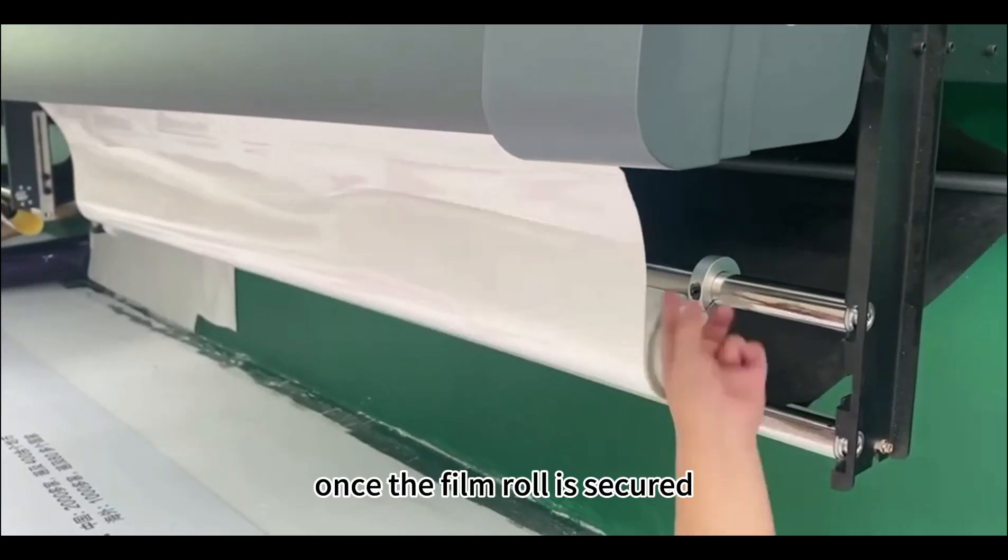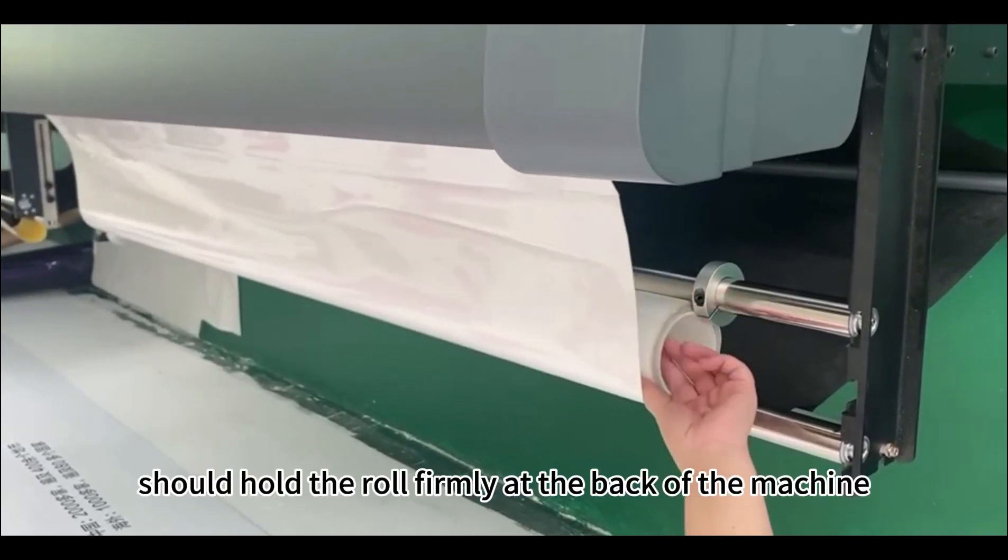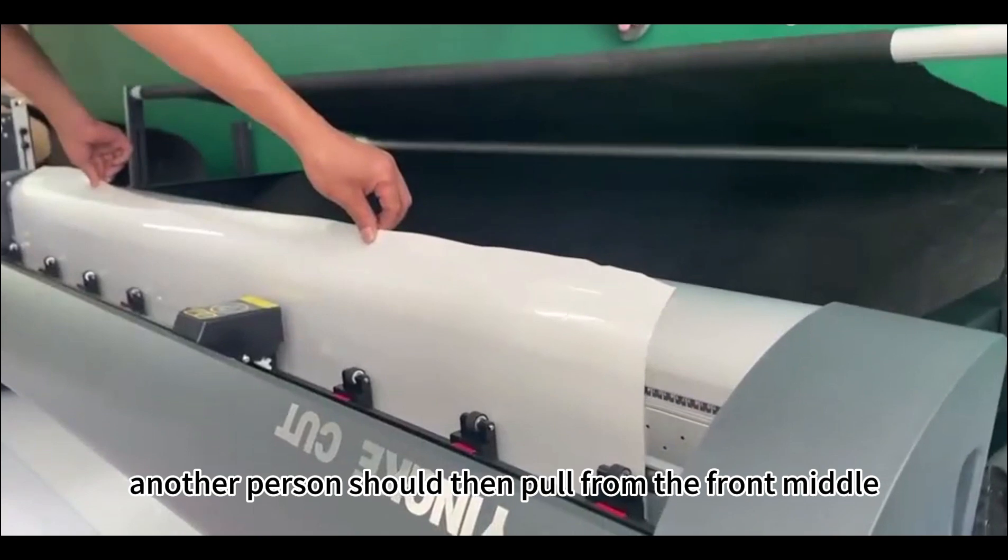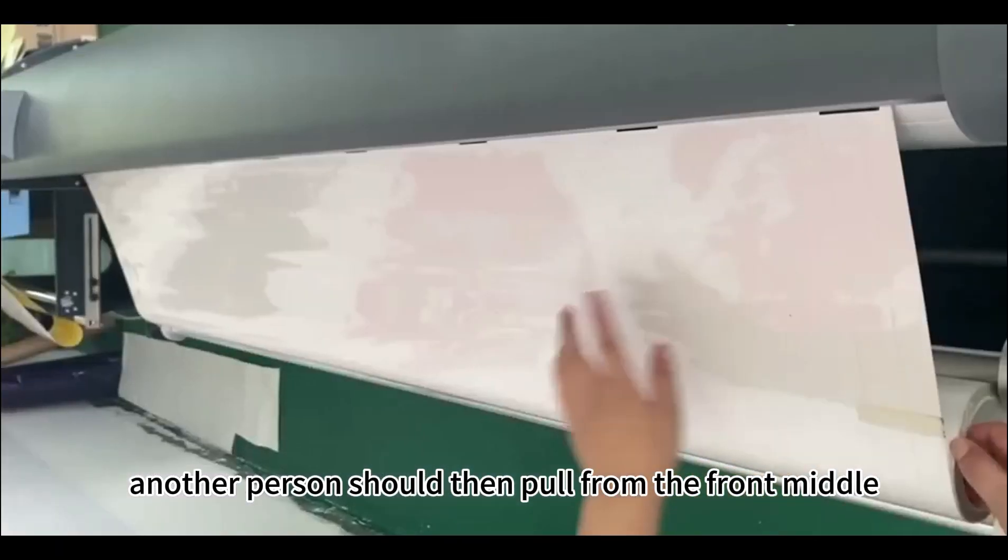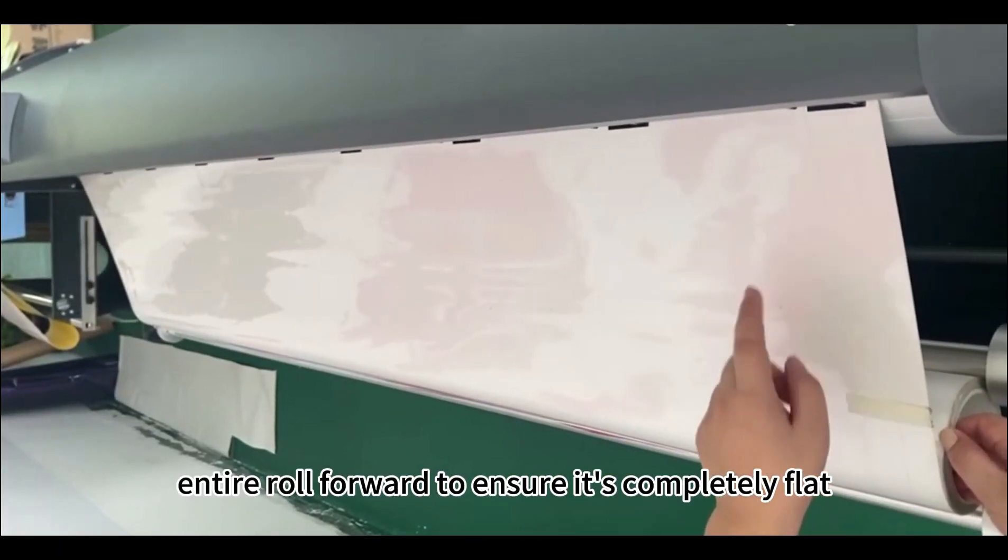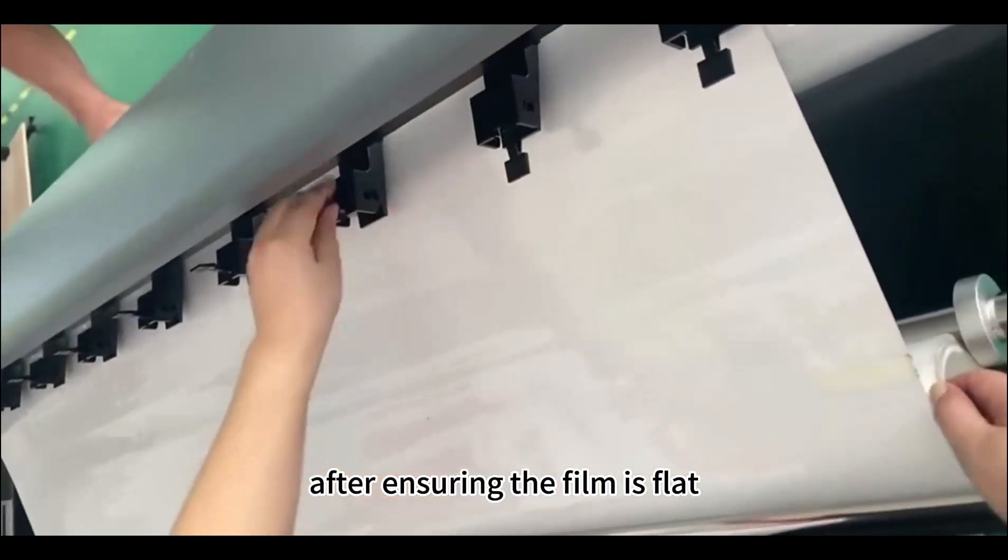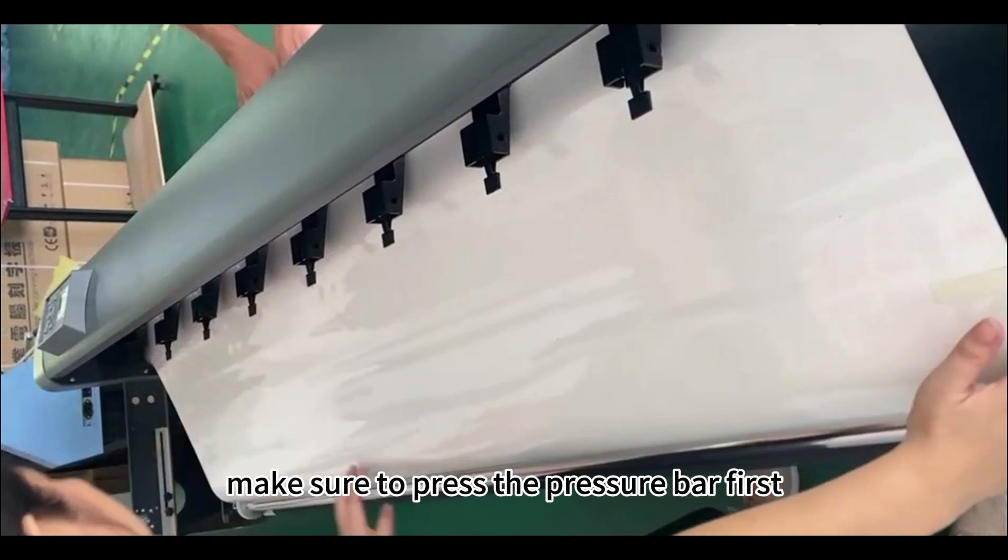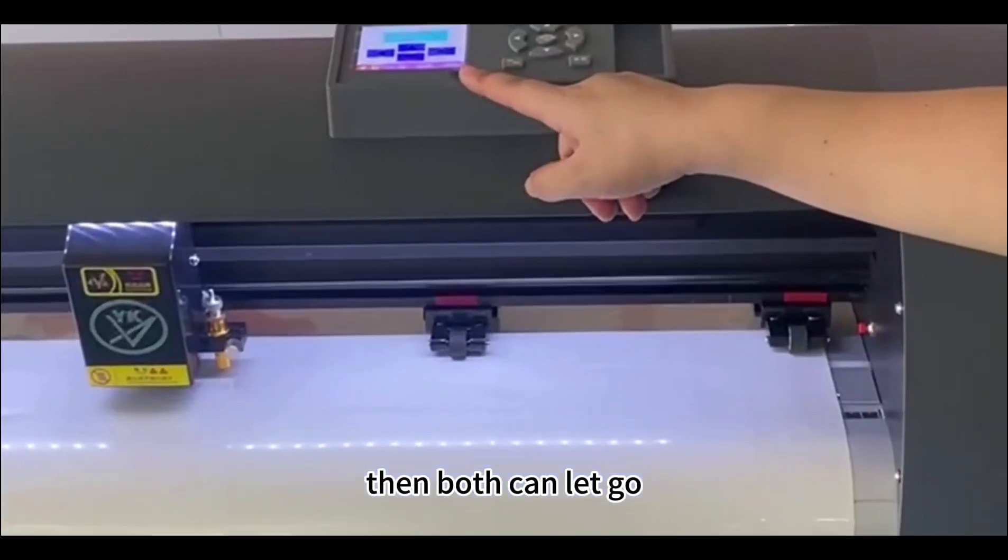Once the film roll is secured, one person should hold the roll firmly at the back of the machine. Another person should then pull from the front middle, pulling the entire roll forward to ensure it's completely flat. After ensuring the film is flat, press down on the pressure bar. Make sure to press the pressure bar first, then both can let go.